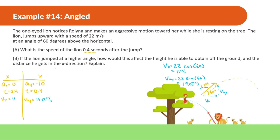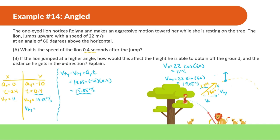Now we find the velocity in y at 0.4 seconds. Using: final velocity in y equals initial velocity in y plus ay times t. So it's 19.05 plus negative 10 times 0.4, which gives 19.05 minus 4 — wait, that's 15.05 meters per second. In the x direction the speed is still 11 meters per second since there's no acceleration.